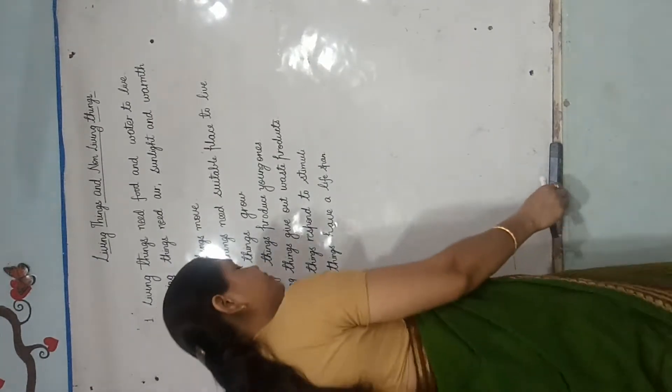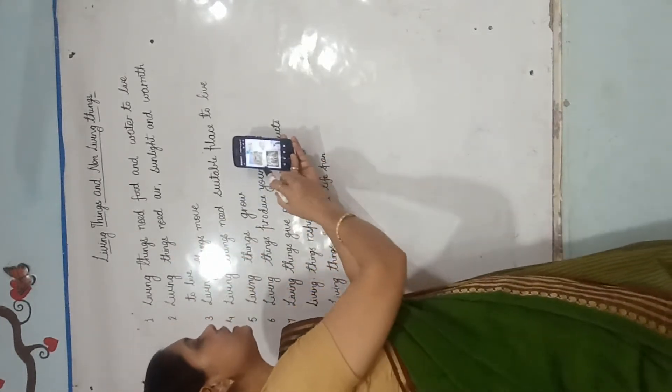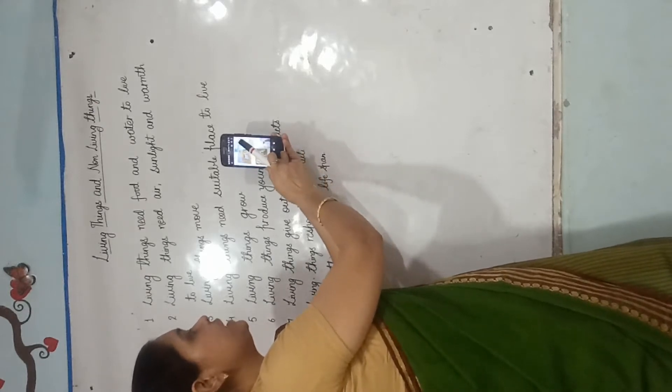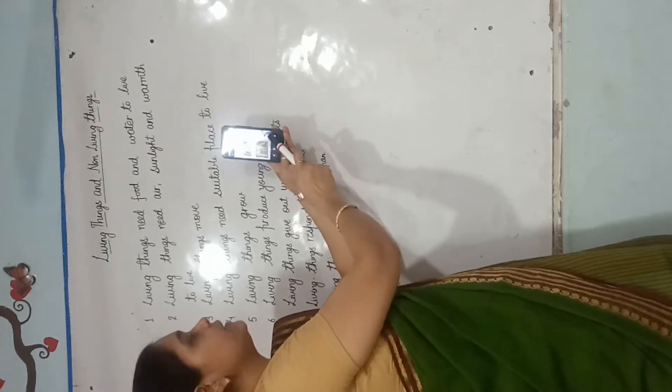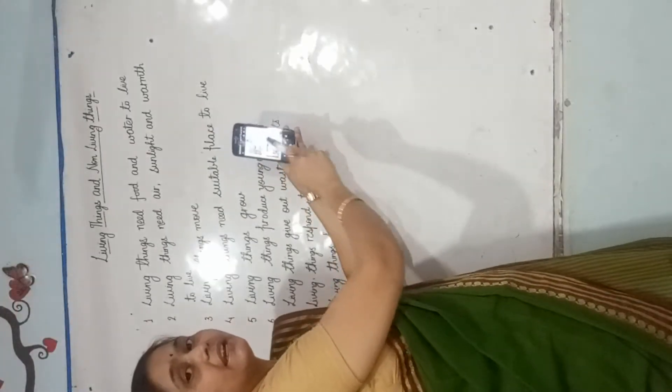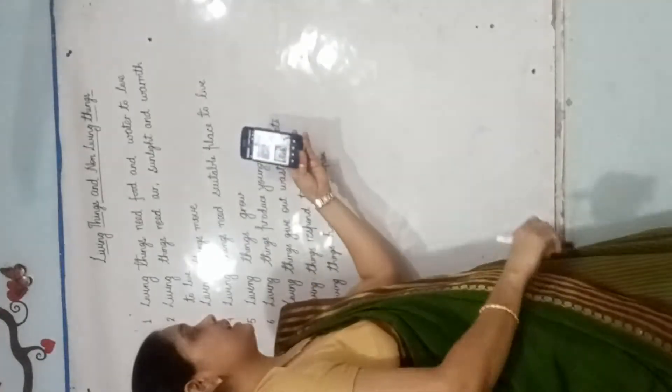मतलब सारे living things जो होते हैं वो particular जगह पे रहते हैं. Like you see in this picture — this is the picture of polar bear, Arctic fox and penguin. They all live in the frozen areas, जहां बर्फ होती है, Arctic region पे ये रहते हैं. जहां temperature बहुत कम होता है, वहां ये animals रहते हैं. और ये आप देखते हैं कि चीता और wild cat.